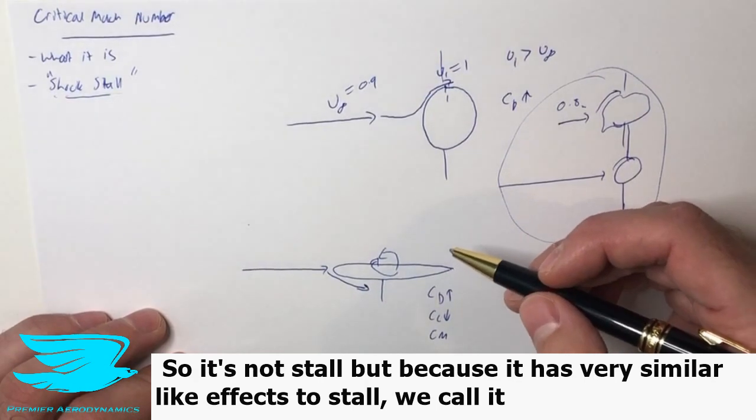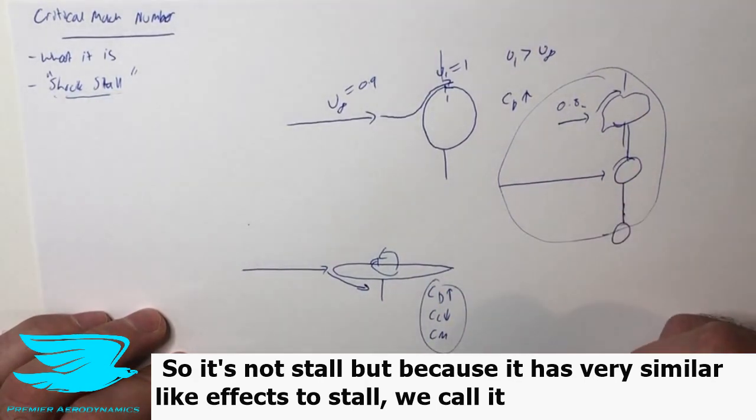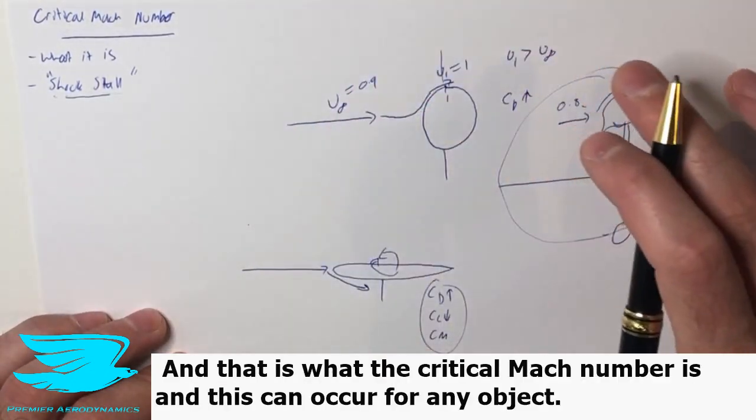So it's technically not stall, but because it has very similar effects to stall, we call it shock stall. And that is what the critical Mach number is.